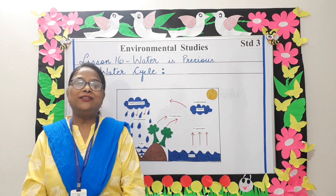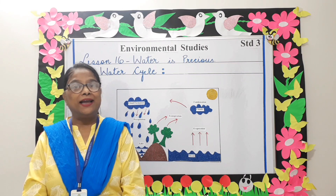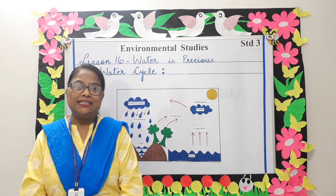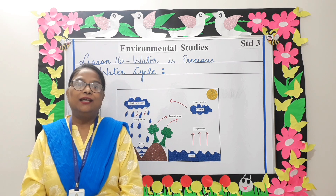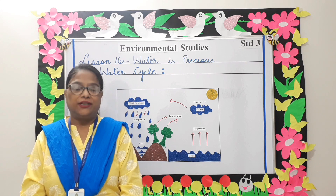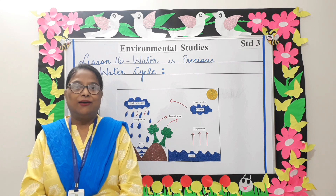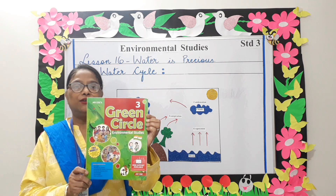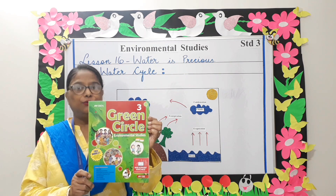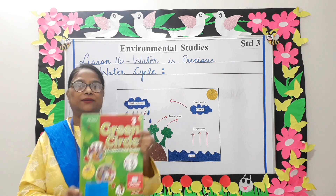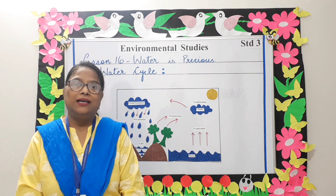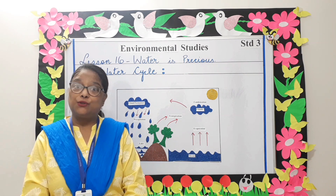Good morning parents and dear students. In today's EBS class, let's take up Lesson 16: Water is Precious. Open your book to page 107 and let's do this chapter. We all know that rain is the main source of water on earth.